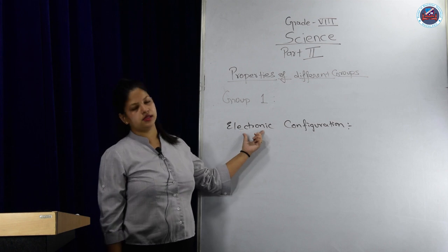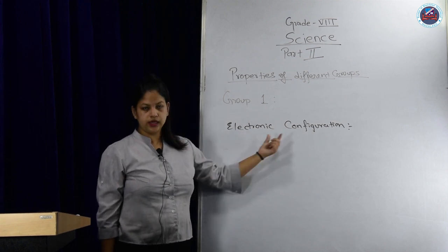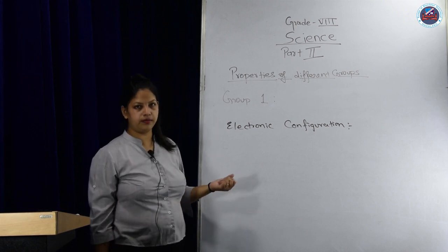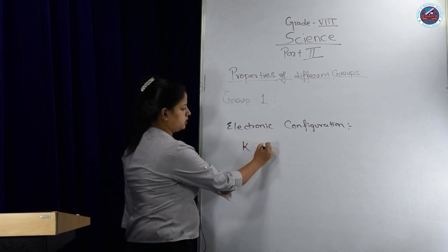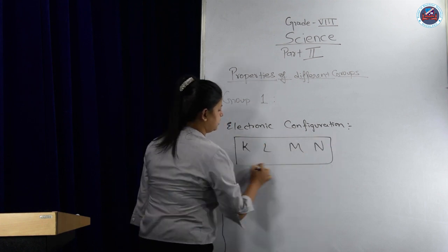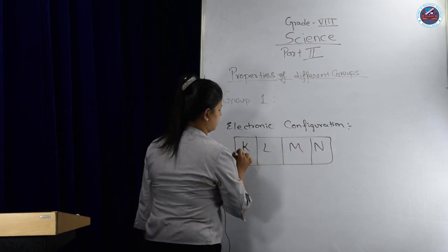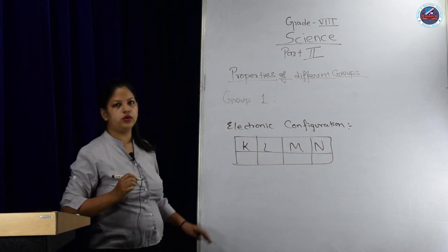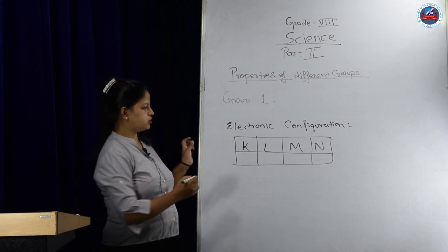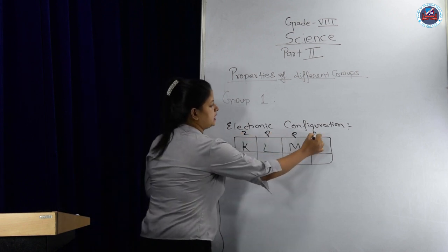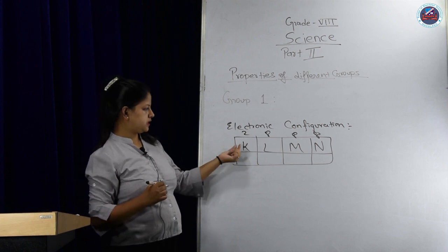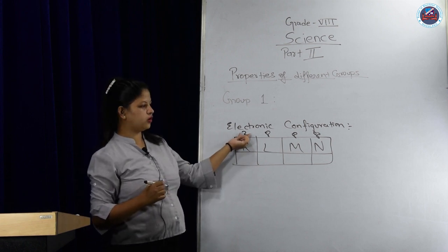This is electronic configuration. For group 1 elements, for each one, we are learning till element 20 only, till calcium from hydrogen. It follows the 2, 8, 8, 8 rule. We call it the octet rule. In K you can occupy till 2 electrons, and in L you can occupy till 8.